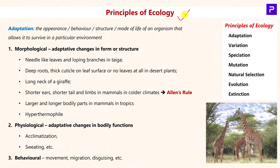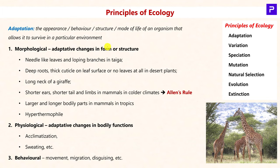Coming to the next topic: Principles of Ecology. Here we will study various processes ranging from adaptation to evolution. Adaptation is a process by which an organism is able to overcome the challenges posed by the environment in which it lives. To overcome these challenges, an organism would have undergone various changes — these could be morphological (changes to form or structure), physiological (changes to bodily functions), or behavioral changes (which are relatively quicker).